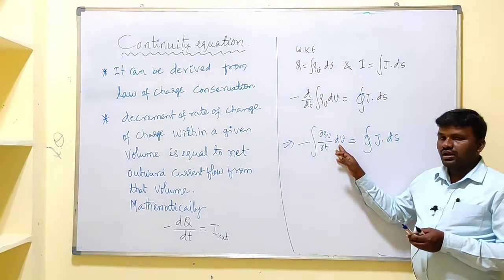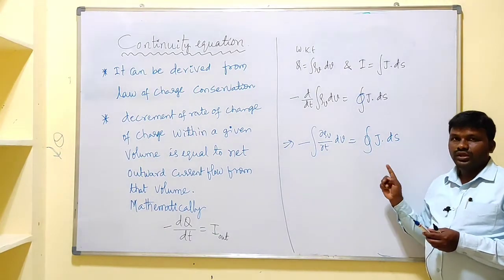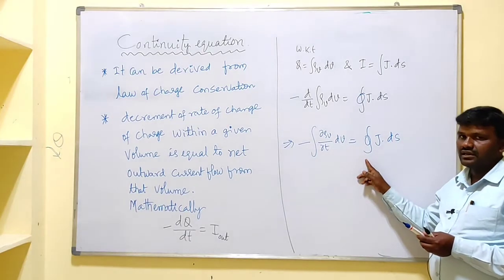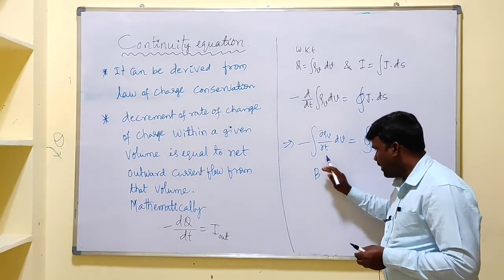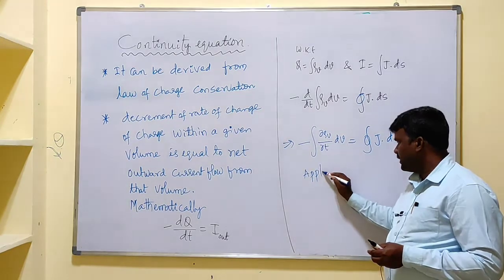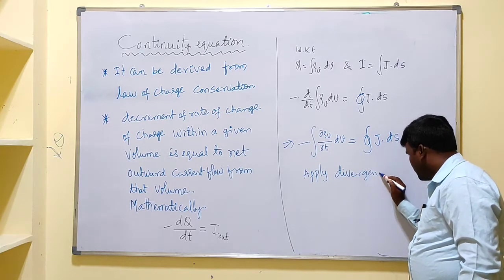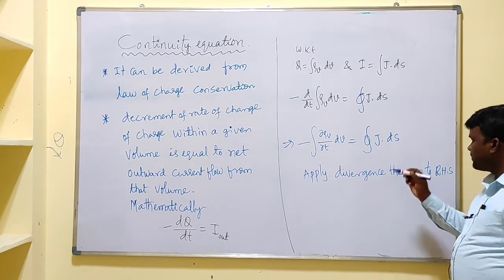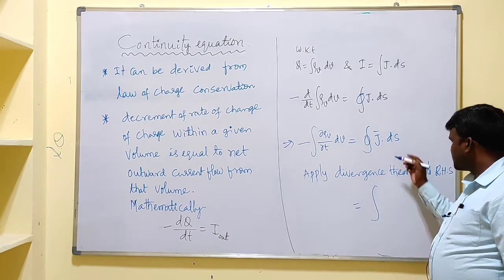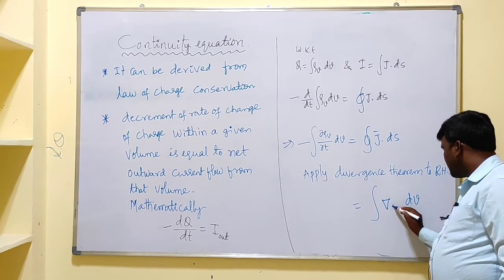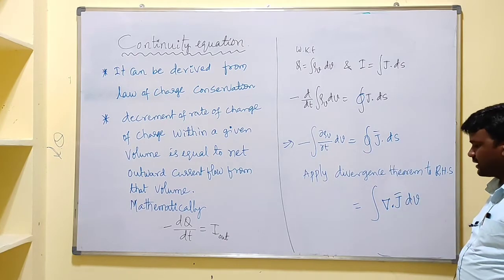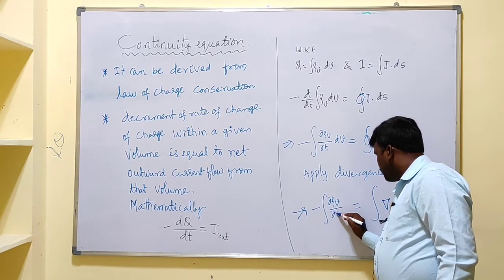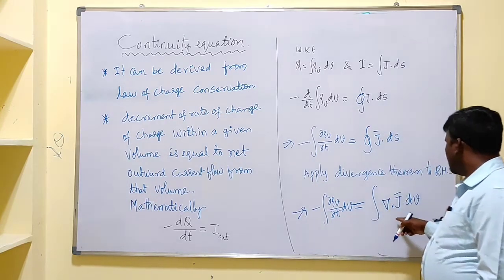On the left-hand side we have a volume integral, and on the right-hand side we have a closed surface integral. We know that a closed surface defines an open volume, so to relate these two sides, we convert the closed surface integral into a volume integral by applying the divergence theorem. The divergence theorem converts a closed surface integral into a volume integral, where the vector J becomes the divergence ∇·J. Applying this gives us: minus the integral of (∂ρv/∂t) dV equals the integral of (∇·J) dV.